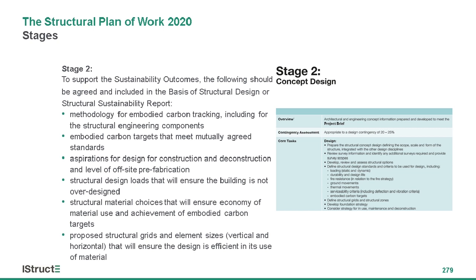The structural sustainability report should include the methodology for embodied carbon tracking, the targets, aspirations for design for construction and deconstruction, loading, material choice, and the grids and element sizes. We think this is a critical part of stage two, and by writing it down, it becomes a clearly defined part of the brief for the future design stages. It means you've got something to go back against and check — are we meeting what we said we were going to do?